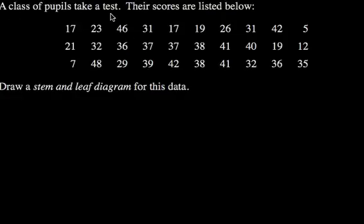In this example, we've got a lot of different results here, all for test scores, and they're all in a random order. And there is a much better way of presenting all of this, using what's called a stem and leaf diagram.